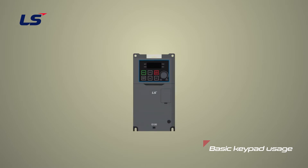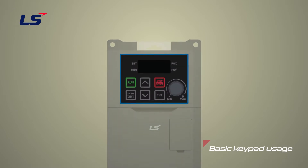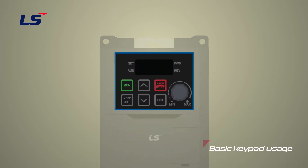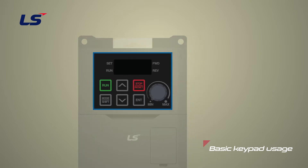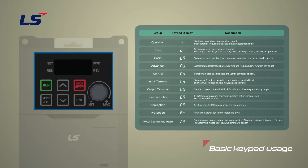First, let's start with the configuration of the parameters of the G100 in order. There are 11 parameter groups of the G100, and you can move between groups by pressing the Mode Shift key located at the bottom left of the keypad.